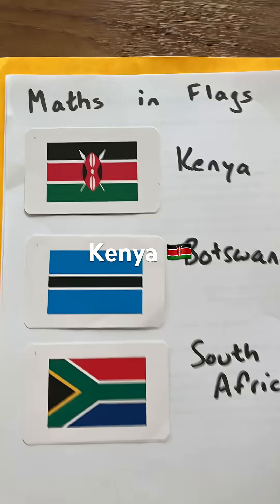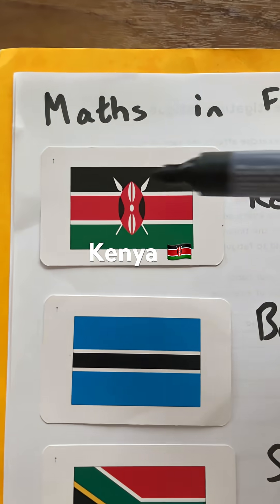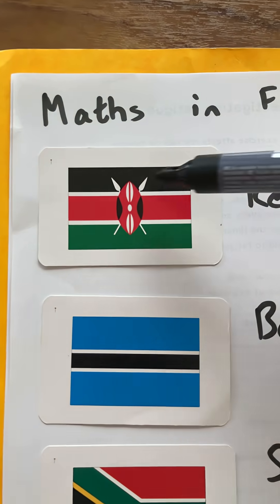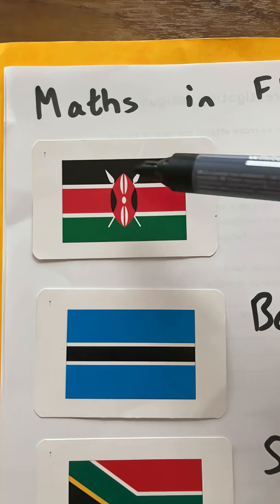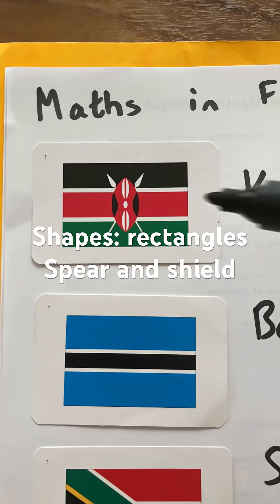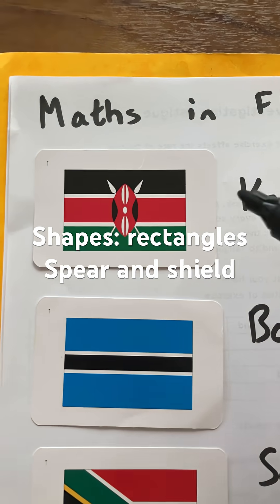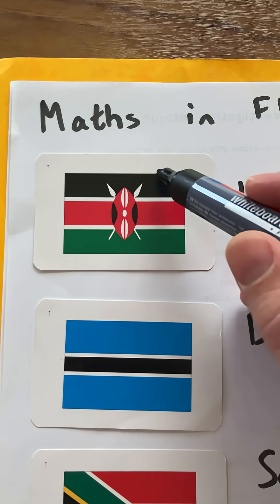In the first flag with Kenya, we have the background of some rectangles, a shield and spears is the shape, and we definitely have lots of parallel lines.